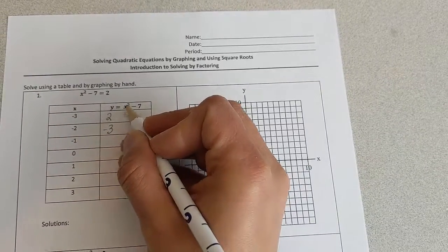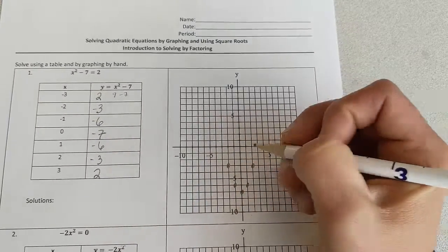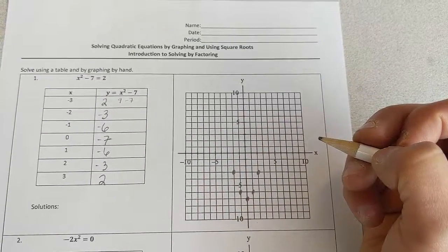Plug in negative 1, 1 minus 7 is going to give me negative 6, then negative 2, negative 3, and at 3, we get 2.